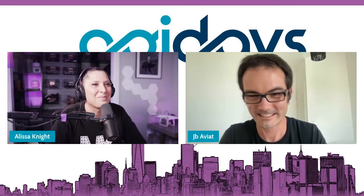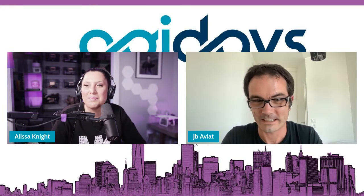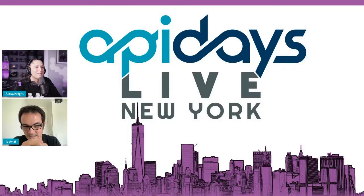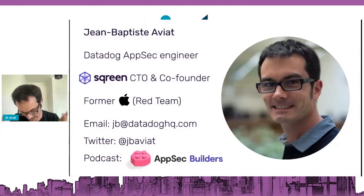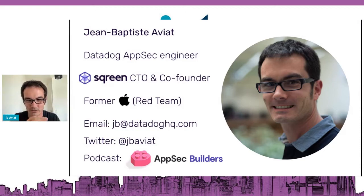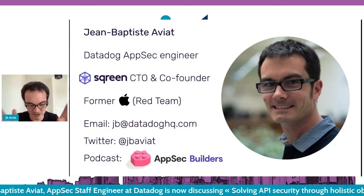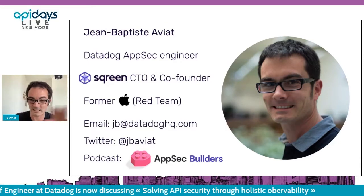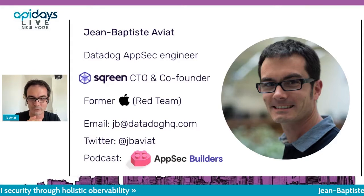Thank you, Melissa. Amazing intro. Nice to meet you, everyone. So as Melissa announced, let's talk about API security and observability. I'm a Datadog AppSec engineer. I was a Sqreen CTO and co-founder. Sqreen got acquired by Datadog in 2021. I'm a former Apple Red Teamer doing a lot of reverse engineering and internal systems, was a pen tester, and I'm also the host of the AppSec Builders podcast. Feel free to take a look.